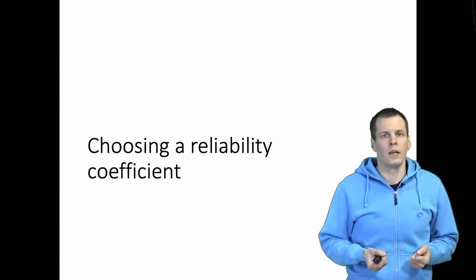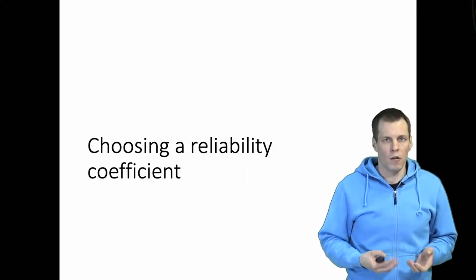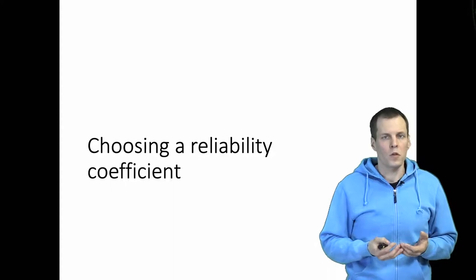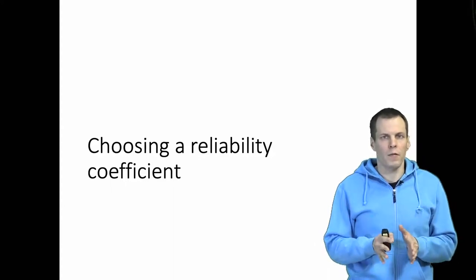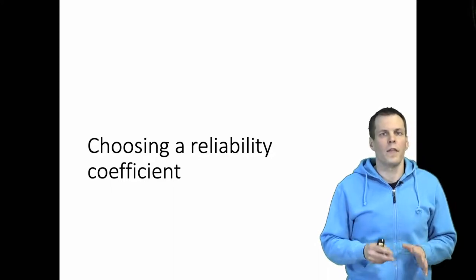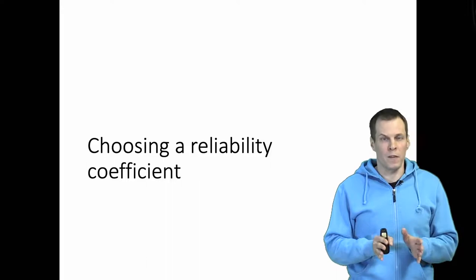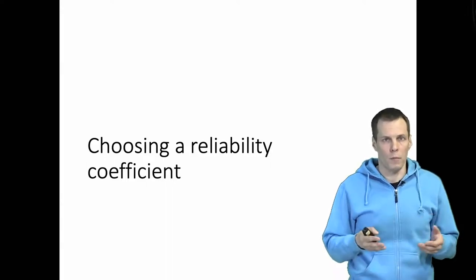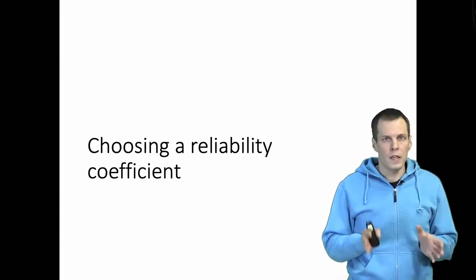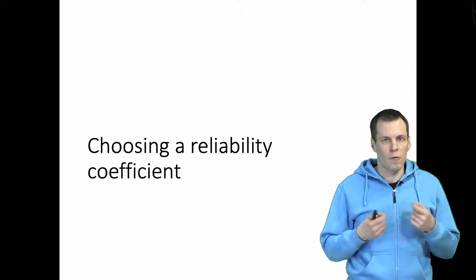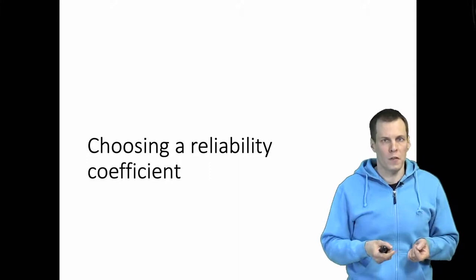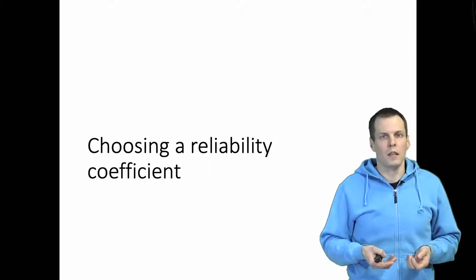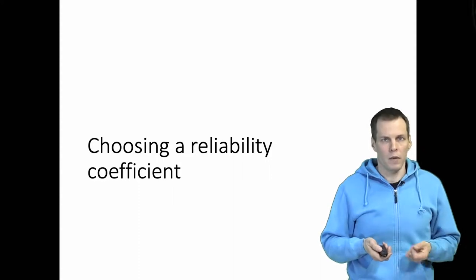Assessing the reliability of a study or a measure is a two-step process. First, you need to choose a statistic to quantify reliability, and then you need to interpret the specific value of that statistic calculated from your sample. In this video, I'll talk about the choice of reliability coefficient — how to choose it as the statistic that you apply to estimate reliability.